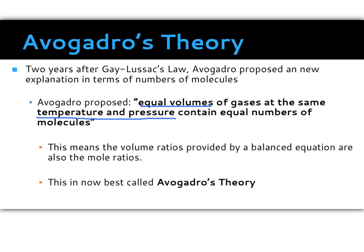So the example we just did was two to one — we're going to get two times the hydrogen than we will oxygen. That means we're going to get two times the moles of hydrogen as well as two times the volume of hydrogen. This is called Avogadro's theory.